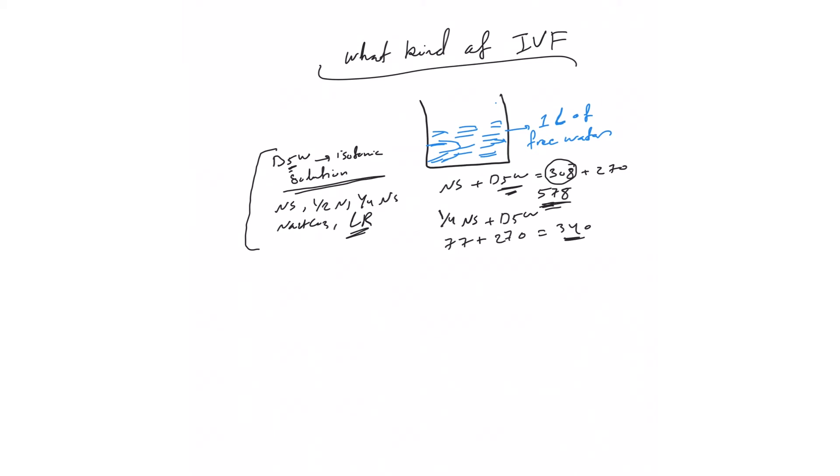You can say I want normal saline with 40 milliequivalents of potassium. This will be 308 plus 40, which is 348 - slightly bigger than 290, so slightly hypertonic solution.